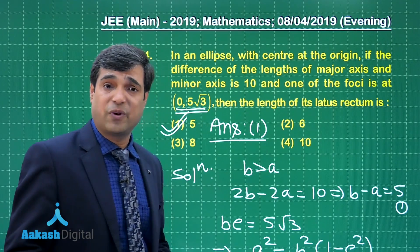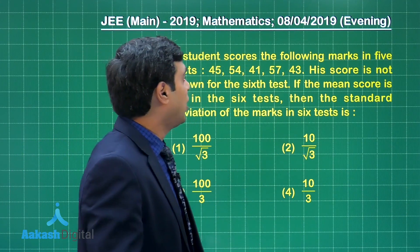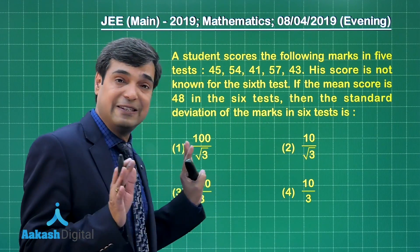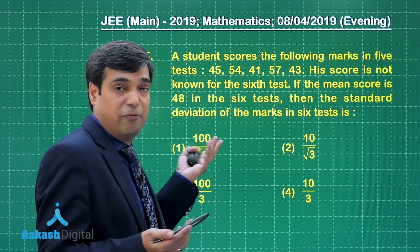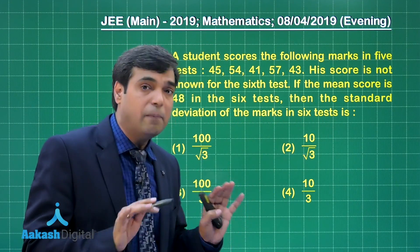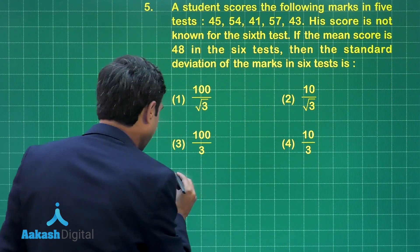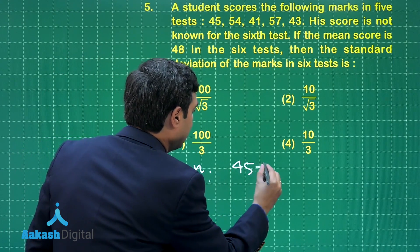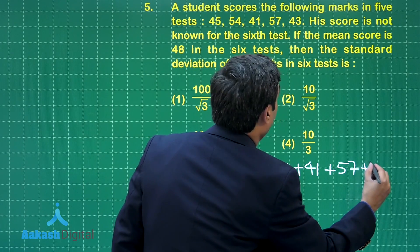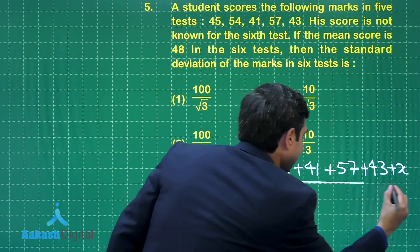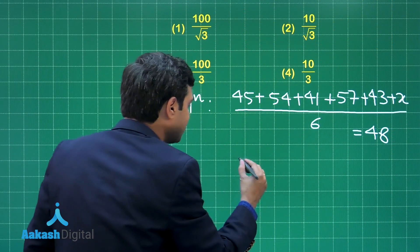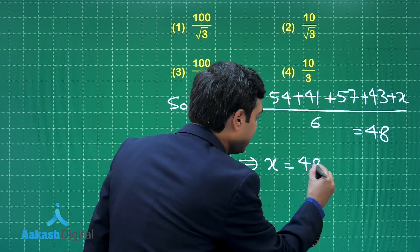Let us move on to question number 5. A student scores the following marks in 5 tests: 45, 54, 41, 57, 43. The score is not known for the sixth test. If the mean score is 48, we set up: (45 + 54 + 41 + 57 + 43 + x) / 6 = 48. Simplifying, we get the value of x as 48.